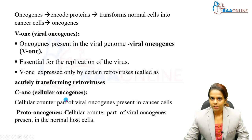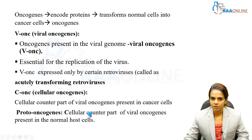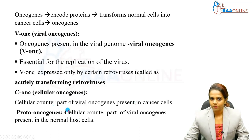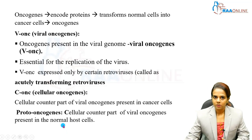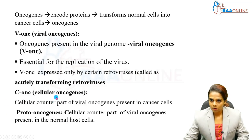The C-oncogene is a cellular oncogene — it is the cellular counterpart of the viral oncogene, present in cancer cells. Proto-oncogenes are the cellular counterpart of viral oncogenes present in normal host cells. So: V-oncogene is in the viral genome, C-oncogene is in cancer cells, and proto-oncogene is in normal host cells.